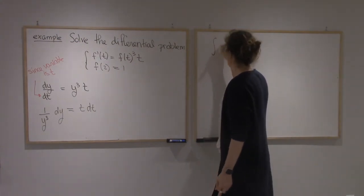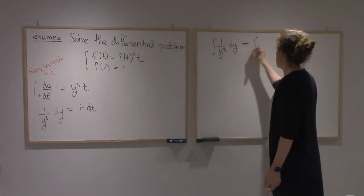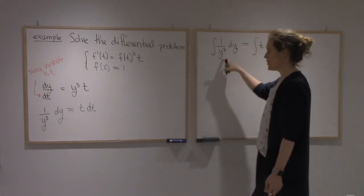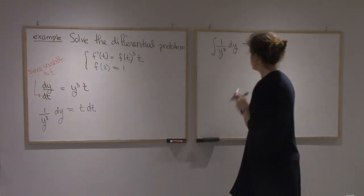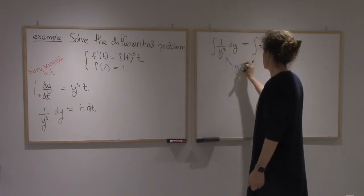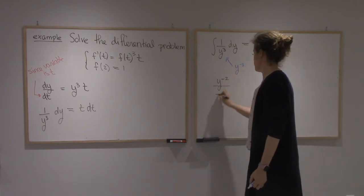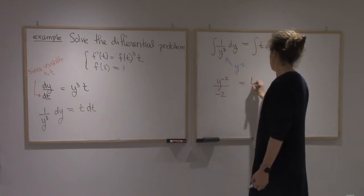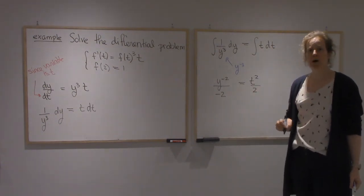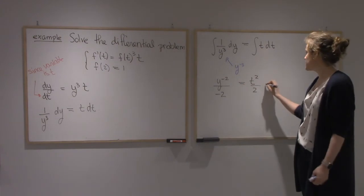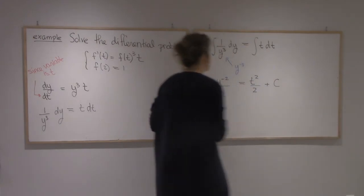Right, so I'm going to integrate 1 over y cubed dy. That will give me the same thing as the integral of t dt. On this side, this is y to the minus 3. So I'm going to get y to the minus 3 plus 1 divided by minus 2, equals t squared over 2. And like I mentioned in the last problem, you don't need to put two plus C's. They kind of join together into a single one. And so I would leave a single plus C on this side.